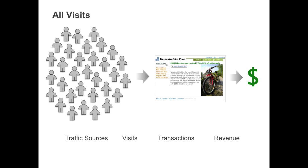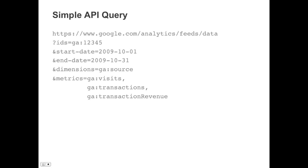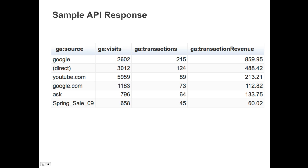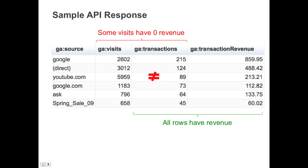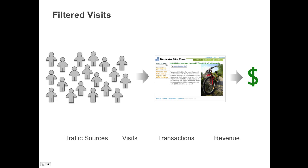The previous query returned data for all visits to the site, and not the segment of visits that had greater than zero dollars in revenue. Let's go back to our query and add a filters parameter that defines transaction revenue greater than zero. Notice now all the sources of traffic have revenue, but the number of visits and number of transactions is still very different, and the data returned still includes visits with zero dollars in revenue. Using the filters parameter, all we have done is filter out some sources of traffic, but we still haven't found the segment of visits that have made a purchase.